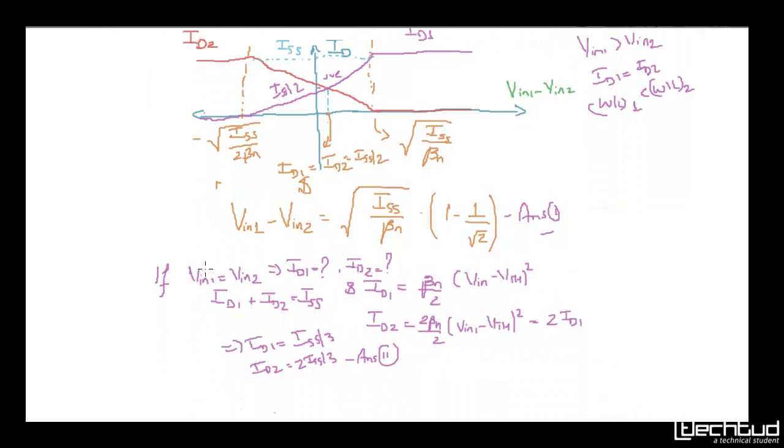So that is second part. I am putting extra part here, it is not given in the problem but I am putting it up. So vin1 equals vin2. What is the id1 and id2? So we know this term again. This equation we know.